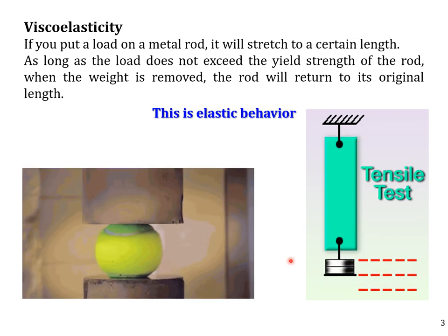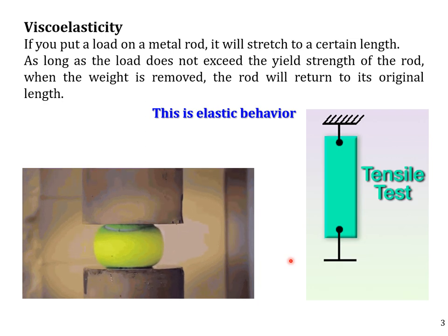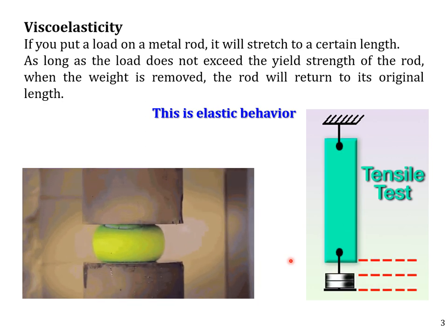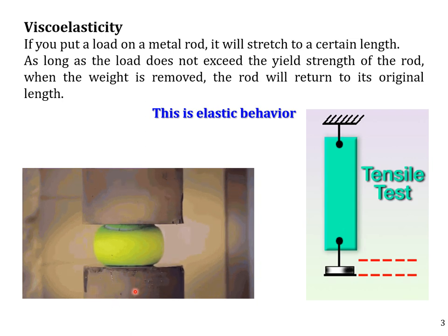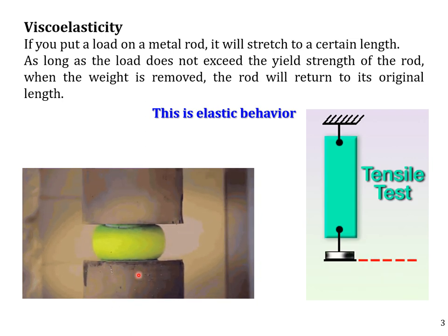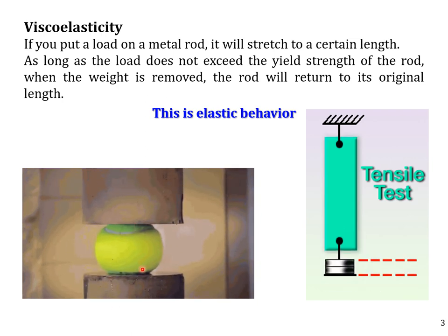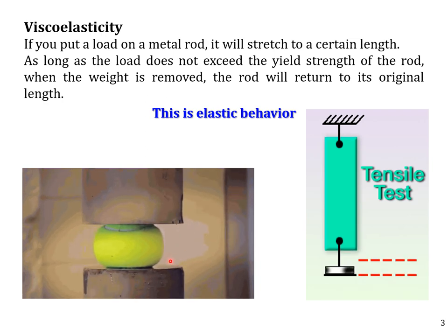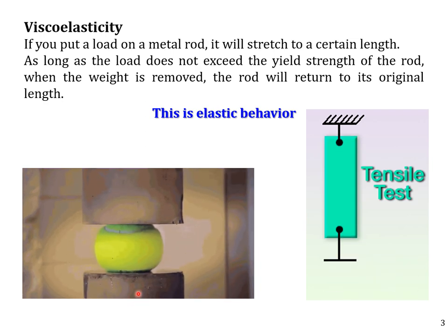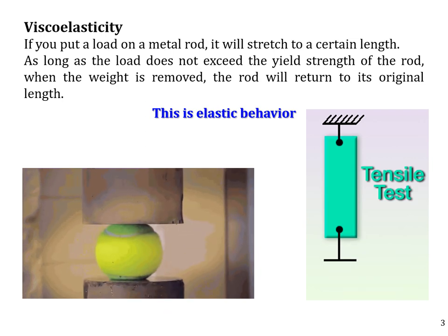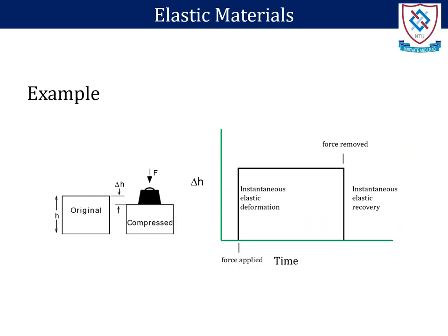Here we can see another example: the tennis ball. If we press it, it will compress, and on removal of the load it immediately comes to its original position. This behaviour is called elasticity.